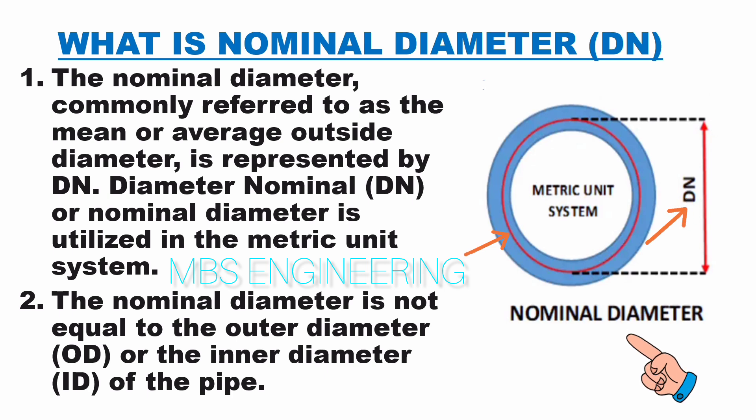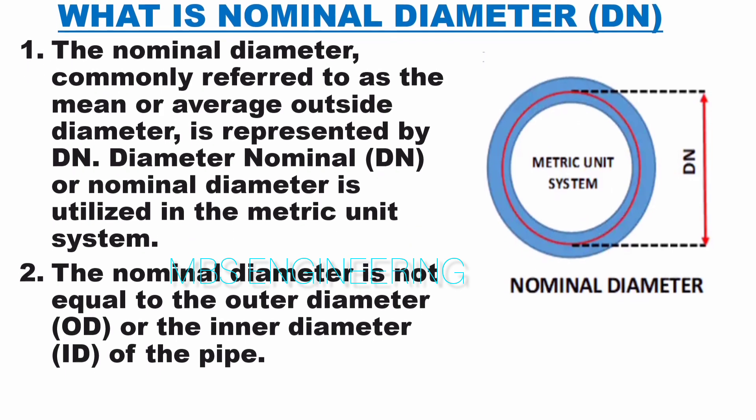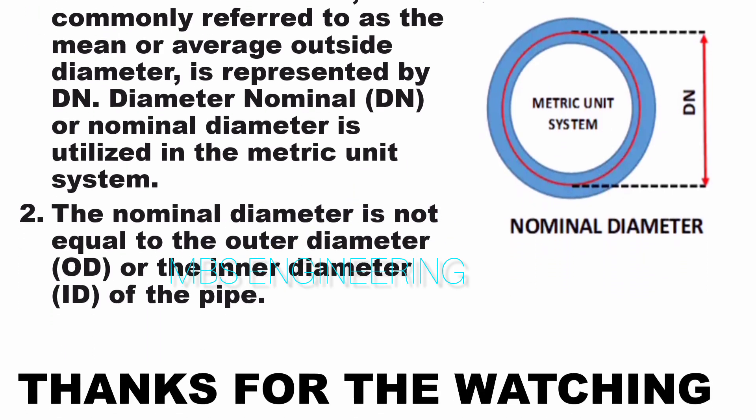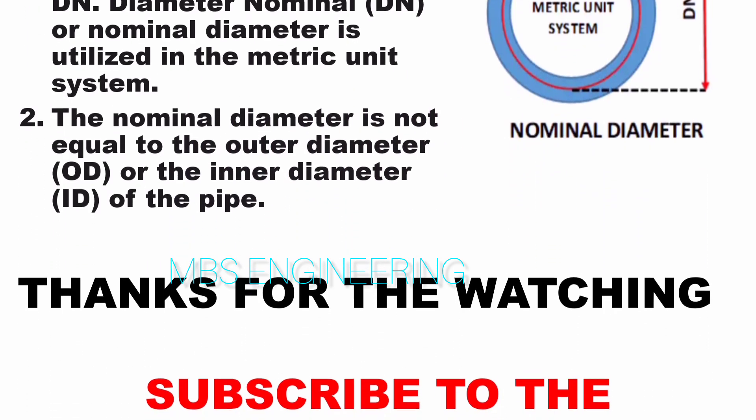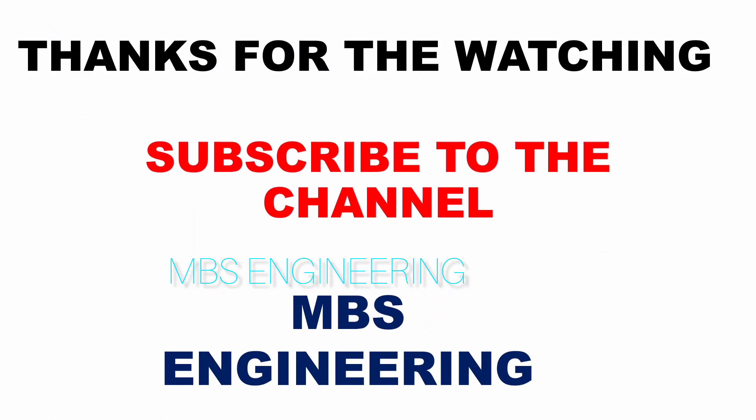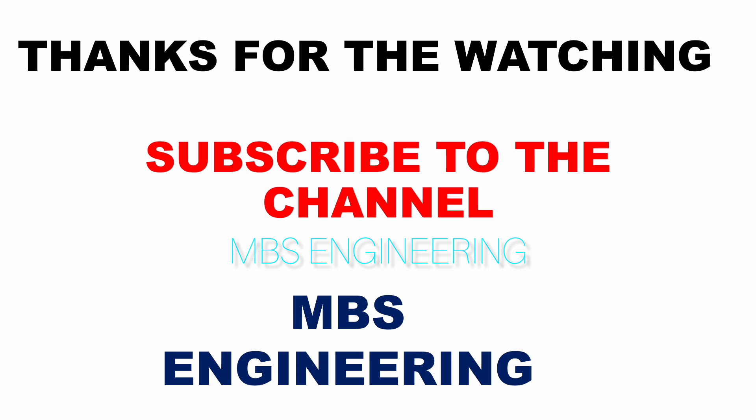We hope this explanation clarifies the pipe size specifications: NPS, nominal pipe size; NB, nominal bore; and DN, nominal diameter. Don't forget to subscribe to our MBS engineering channel for more informative videos. Thank you for watching.